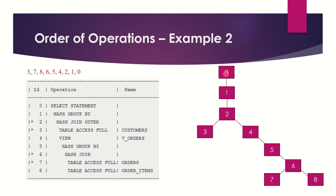We'll start with the first operation, which is zero. Zero will become your parent, so I have written the first parent operation zero here. Zero is the parent and one is the child of zero because it is indented towards the right. So one is marked as the child of zero. Now one is the parent and it has a child which is operation number two, because it is again indented towards the right of operation one. So two becomes the child of one. Now two is the parent and it has got two children — three and four — because operations 3 and 4 are on the same level of indentation, indented towards the right of operation number 2.